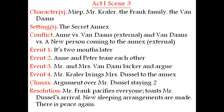So there are two conflicts: Anne versus Van Daans, and Van Daans versus a new person who also arrived at the annex. Event one: it is two months later. Event two: Anne and Peter tease each other, creating small problems in the form of joking. Event three: Mr. and Mrs. Van Daan bicker and argue — bicker means a small, petty quarrel over small issues. Event four: Mr. Kraler brings Mrs. Dussell to the annex — that is the new person.